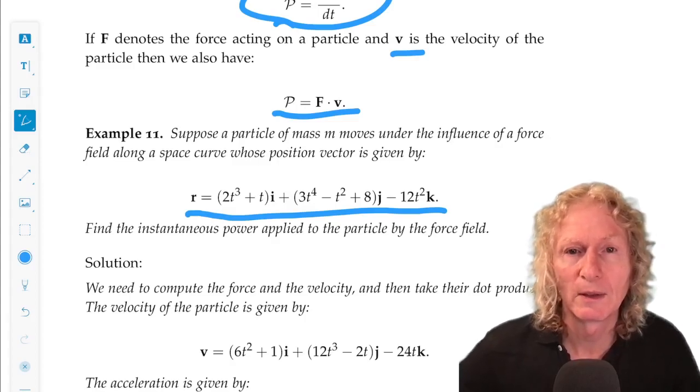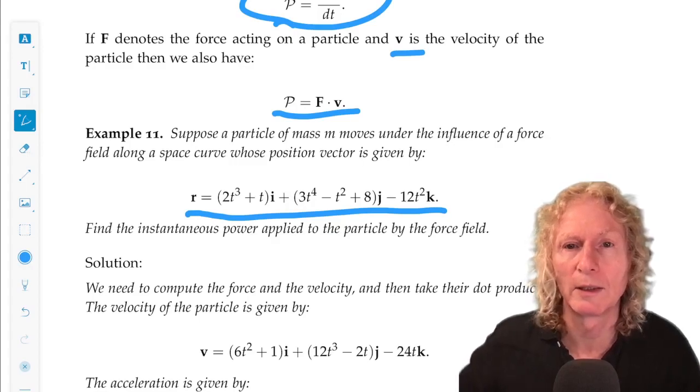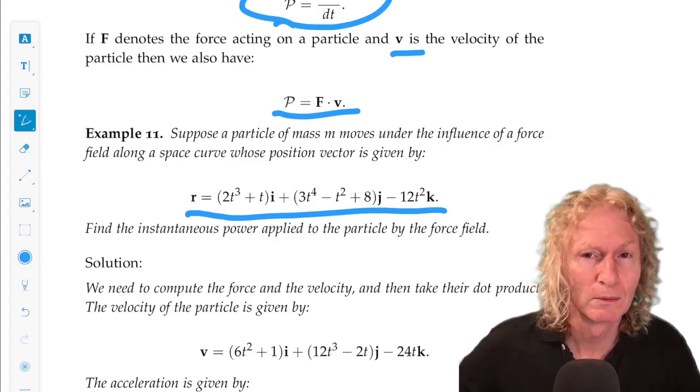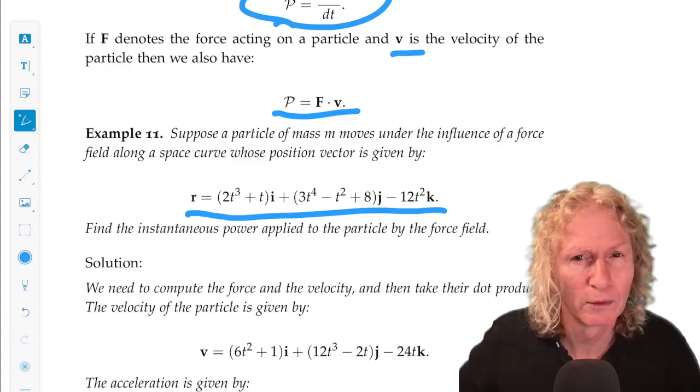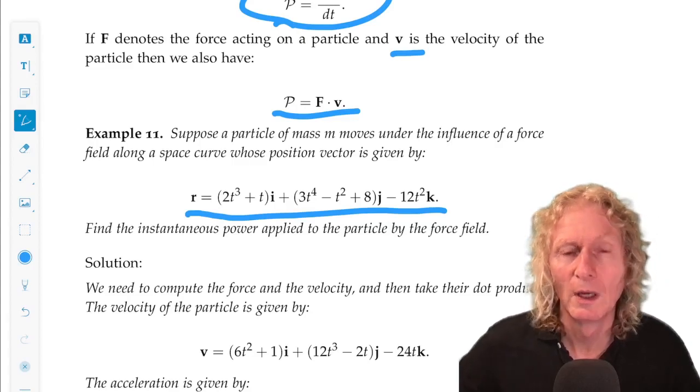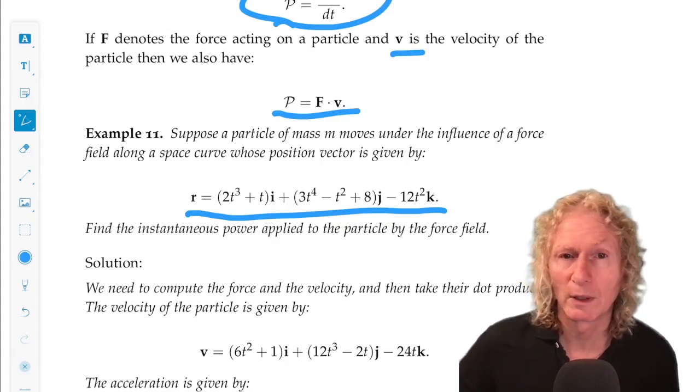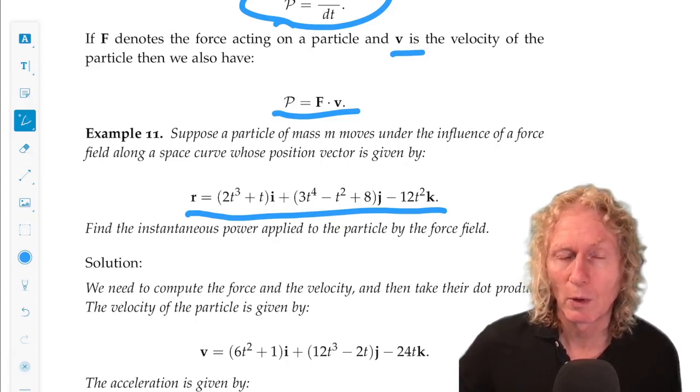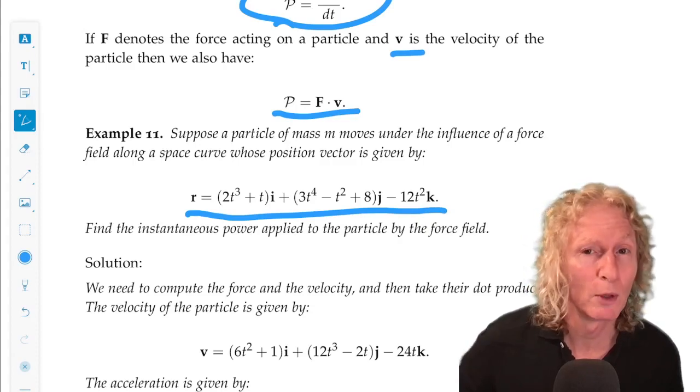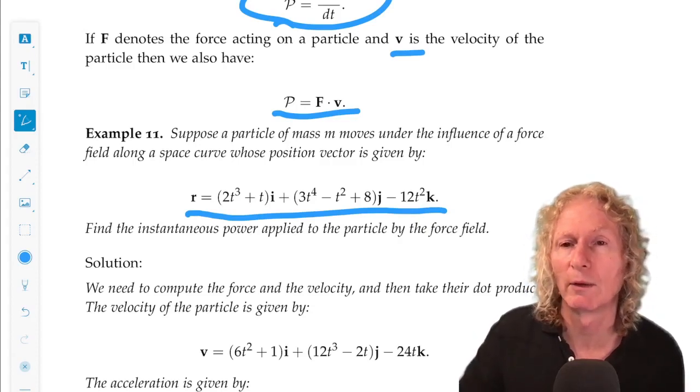Find the instantaneous power applied to the particle by the force field. So, I didn't give you the force, right? So, how are you going to get this? Newton's second law. You have the position vector, you differentiate it twice, you get the acceleration, multiply it by m, and you have the force.